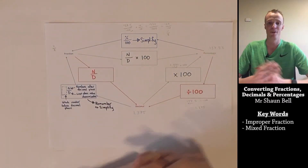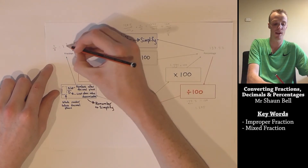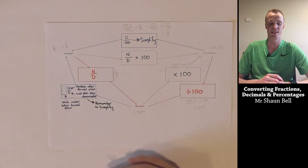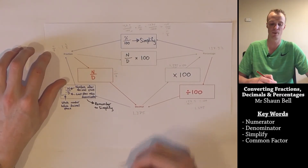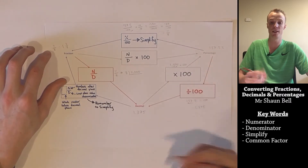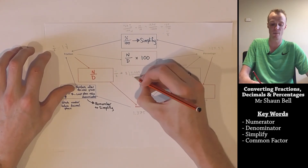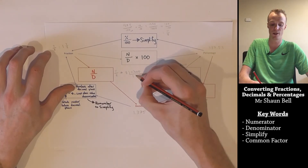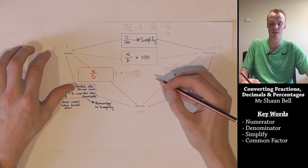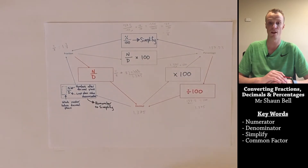This is an improper fraction. We can also express it as a mixed fraction: 8 goes into 11 once with 3 remainder, giving us 1 and 3 over 8. Both answers are acceptable. Next, let's take 11 over 8 and convert it to a decimal by dividing 8 into 11. 8 goes into 11 once with remainder 3, into 30 three times with remainder 6, into 60 seven times with remainder 4, and into 40 five times. Our final answer is 1.375, which is back to where we started.